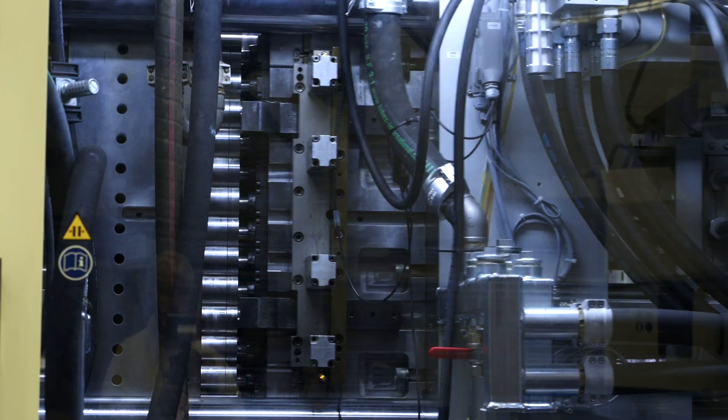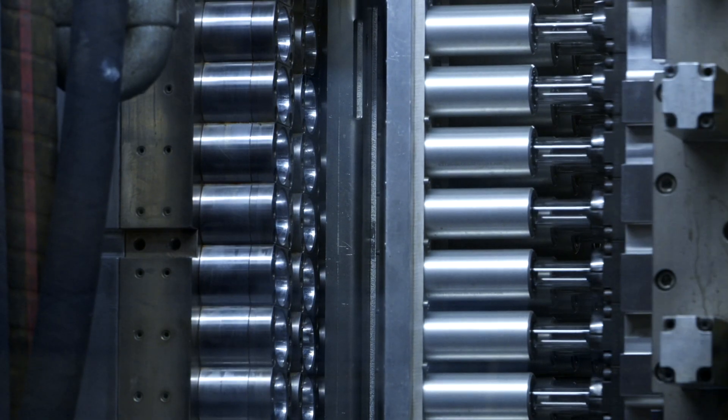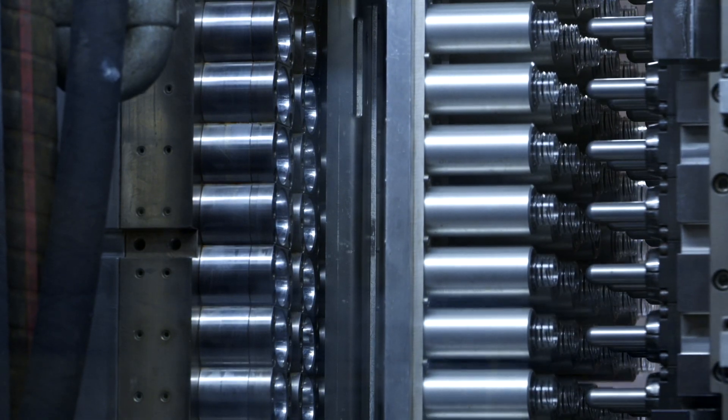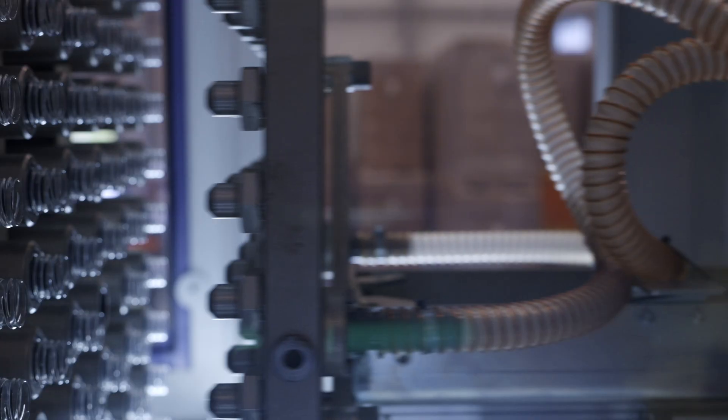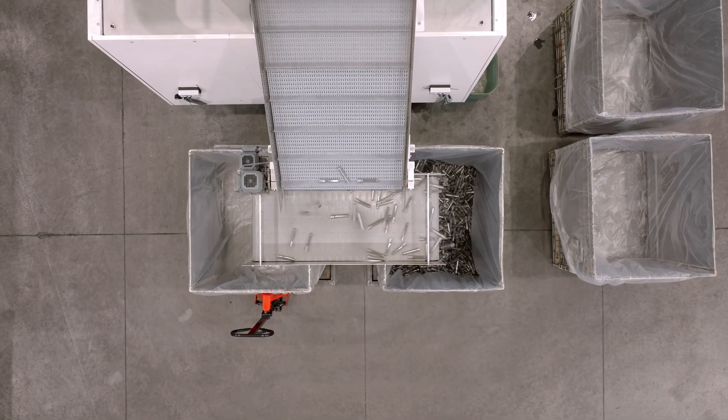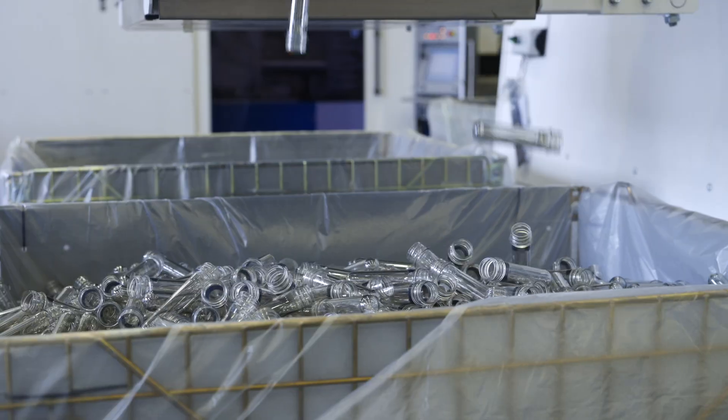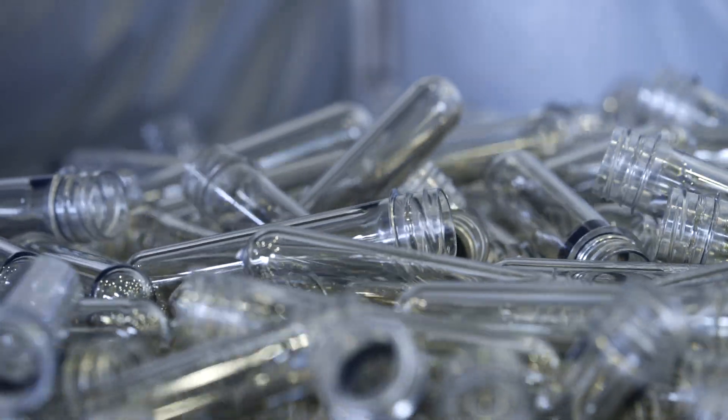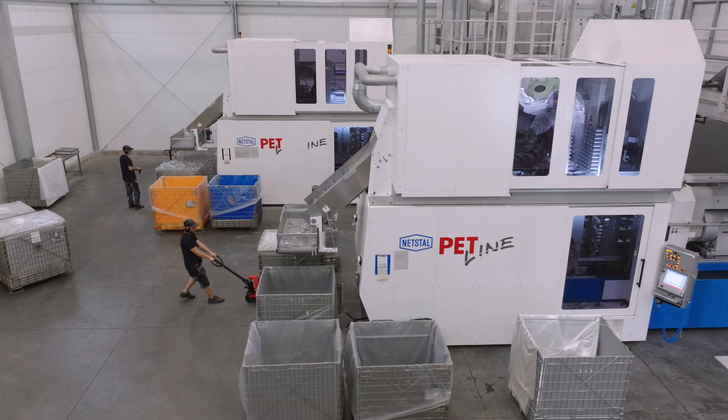A robot collects the products, still warm, and transfers them to a cooling rack. When they cool, the belt transports preforms to returnable baskets to be sent to customers, and everything is done in a completely automated way.